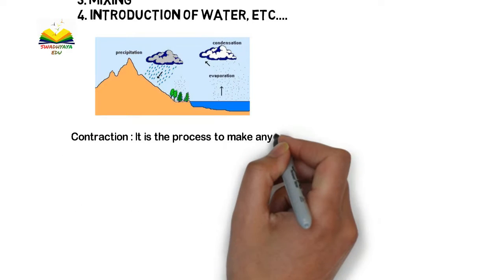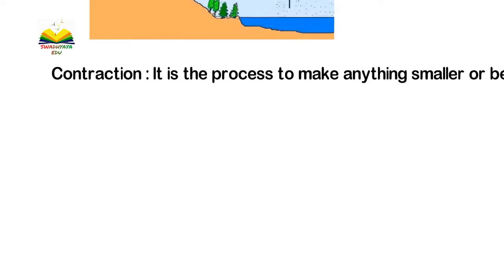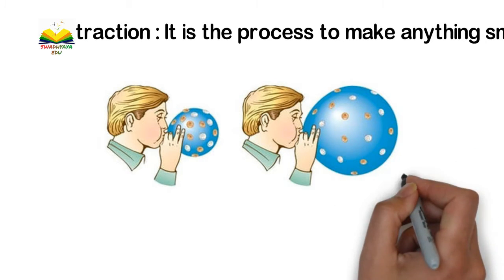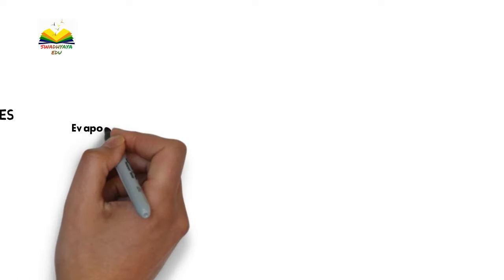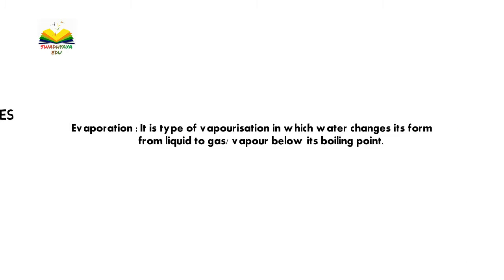The next topic is contraction. It is the process of making anything smaller, or something becoming smaller. Contraction occurs when we compress a big thing to make it smaller. For example, if a balloon is inflated, we can squeeze it to let the air out and make it smaller — that is called contraction.